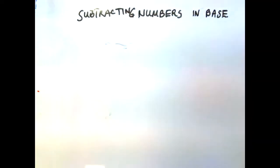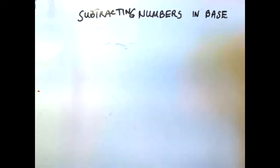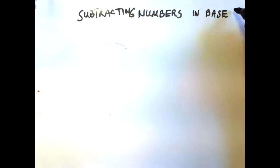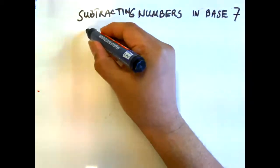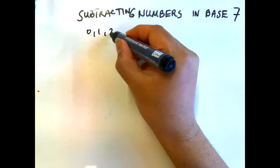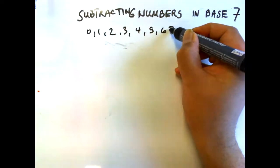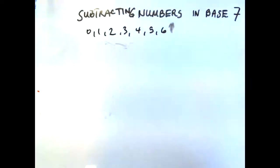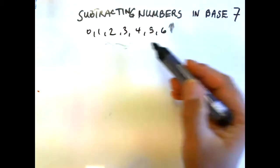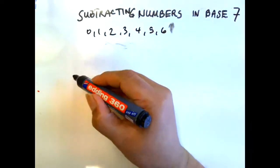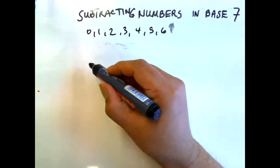Let's get started with subtracting numbers in base 7. Now, what are the symbols that we use in base 7? Obviously there are seven symbols: we have zero, one, two, three, four, five, and six — that's seven symbols in all.